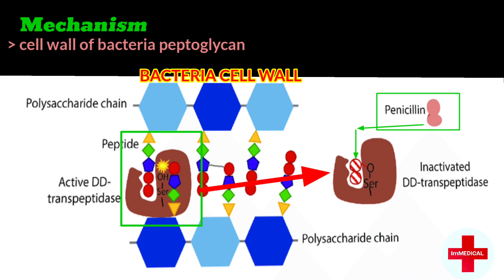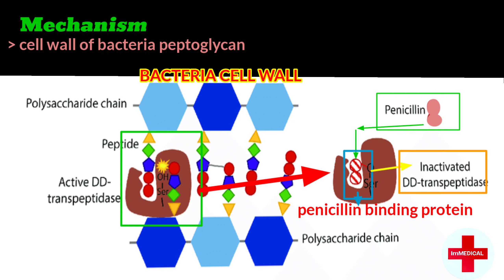Transpeptidase has one binding site. We call it penicillin-binding protein. This is the site where penicillin will attack. When penicillin binds with this penicillin-binding protein, also called transpeptidase, this will block the transpeptidase. Transpeptidase is the enzyme used to synthesize peptides, which help in cross-linking with peptidoglycan to form the cell wall of the bacteria.